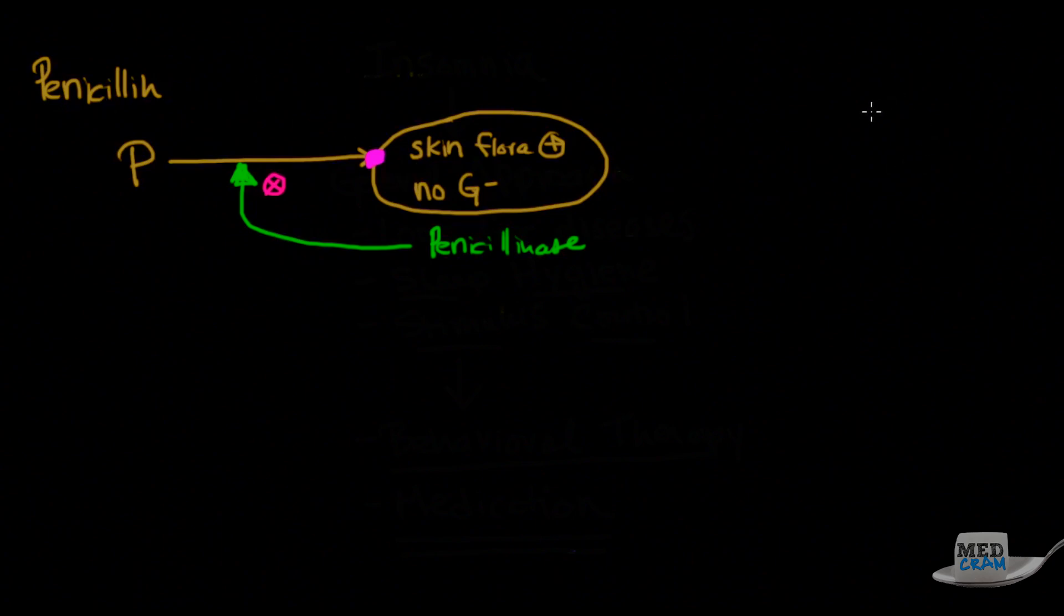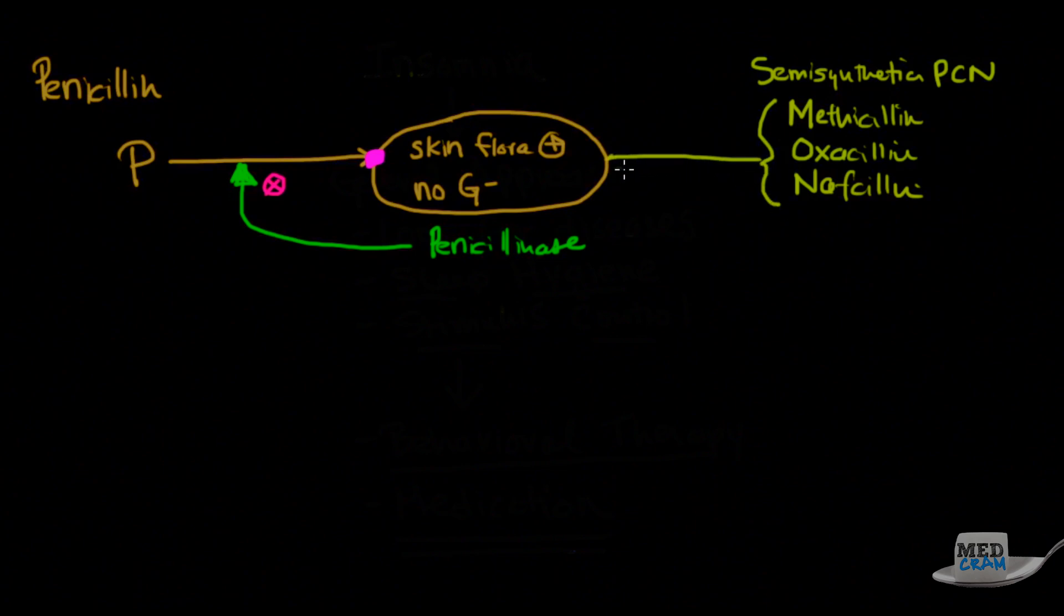So as a result of that, the next thing that came up was what they called the semi-synthetic penicillins. And so you'll notice that these have the abbreviation M, O, N. M stands for methicillin, O stands for oxicillin, and N stands for nafcillin. All three of these were able to attack this bacteria that was still making the penicillinase at the same binding protein. But when these penicillinase molecules tried to attack it, they couldn't. And so we successfully overcame one generation of resistance.